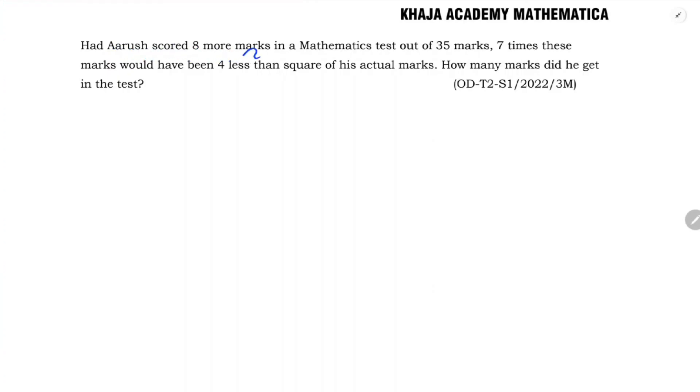Had Arush scored 8 more marks in a mathematics test out of 35 marks, 7 times these marks would have been 4 less than square of his actual marks. How many marks did he get in the test? Let the marks scored by Arush be x.